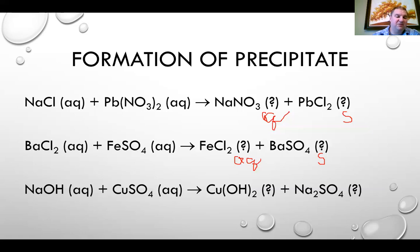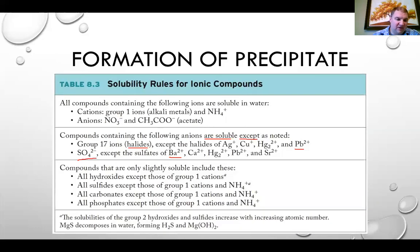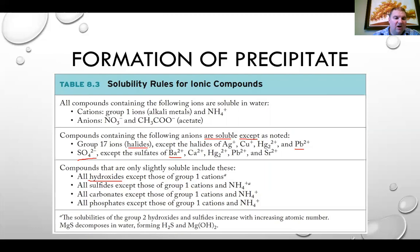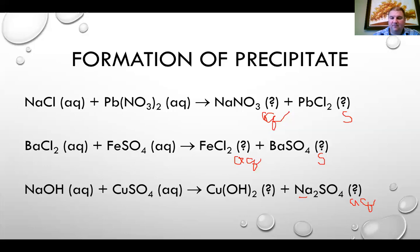Last example: sodium hydroxide and copper(II) sulfate. Copper goes with hydroxide; sodium goes with sulfate. Sodium sulfate: anything with a group 1 metal is soluble, and sodium is not a sulfate exception — so sodium sulfate is aqueous. Copper(II) hydroxide: all hydroxides are insoluble except those of group 1 cations, and copper is a transition metal, not group 1. So copper(II) hydroxide is our solid precipitate.